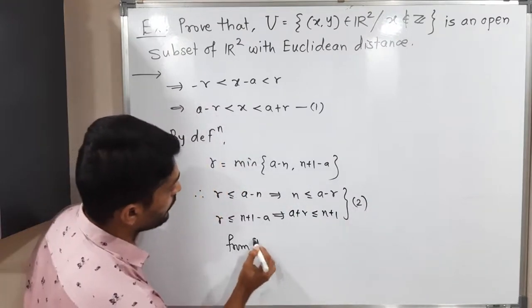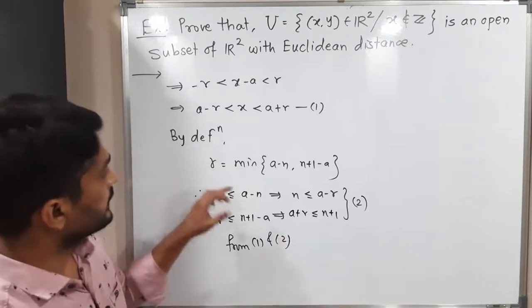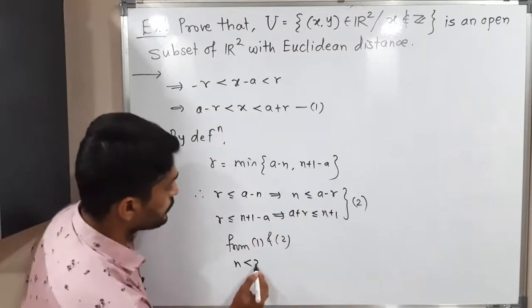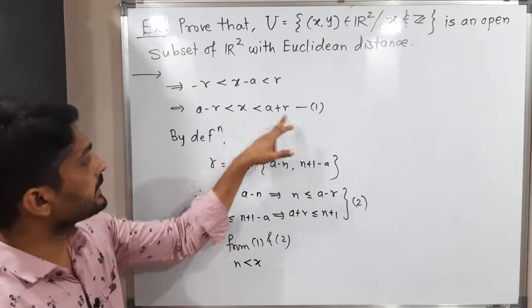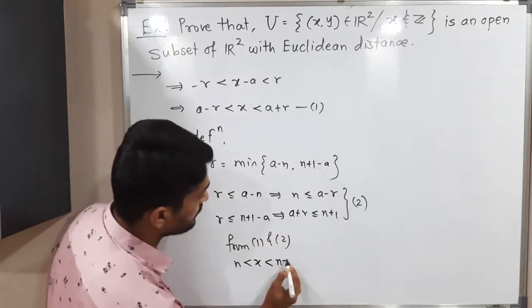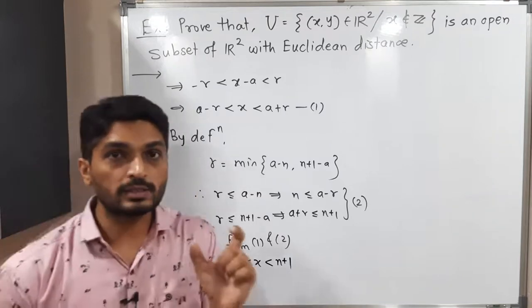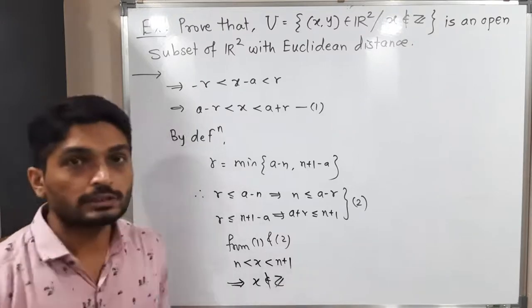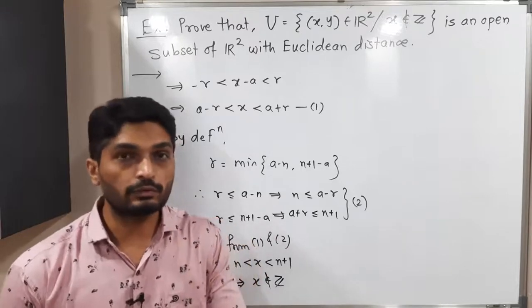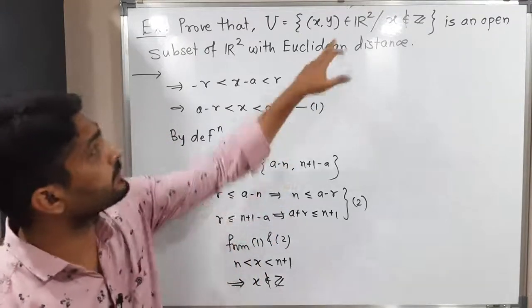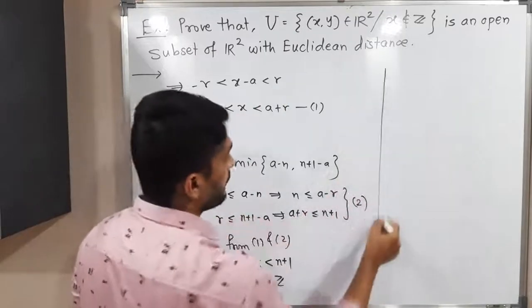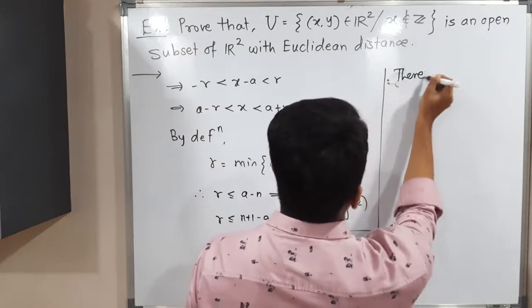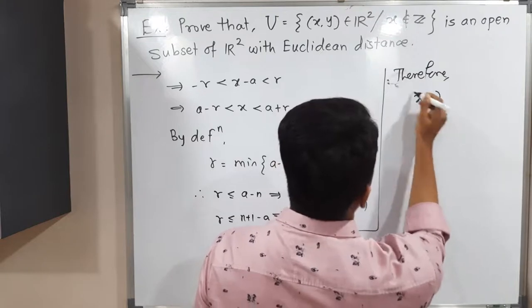Combining inequalities (1) and (2): from (2) we have n ≤ a - r, and from (1) we have a - r < x, so n < x. Also from (1) x < a + r, and from (2) a + r ≤ n+1, so x < n+1. Therefore x lies strictly between two successive integers n and n+1, which means x is not an integer. So the point (x, y) satisfies the condition of U.